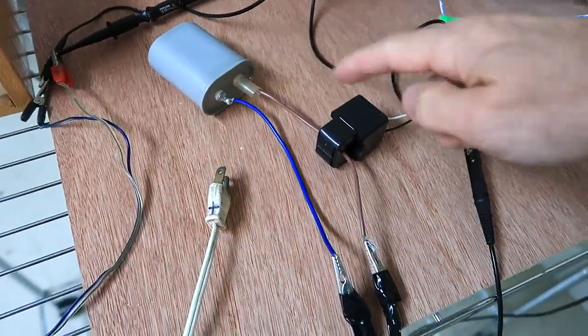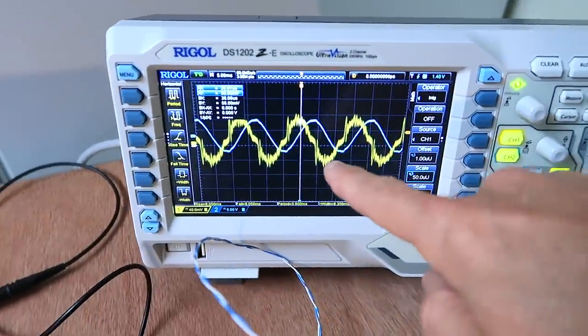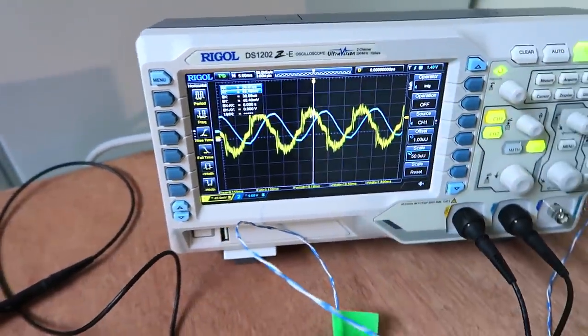So now I hooked up a 16 microfarad capacitor with my current clamp to the scope, hooked up to a power cord. Let's plug that in, and we're getting pretty much the same waveform we got before, maybe just a little bigger. So that mini split, even while it's off, leaves something like a 16 microfarad capacitor hooked up to the line.